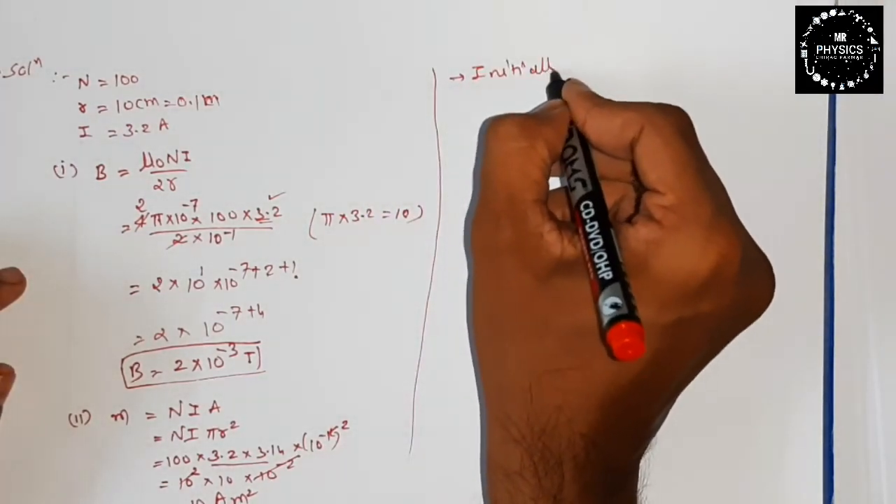When we start from the initial position, initially theta will be zero, so torque is equal to m B sin zero, answer will be zero. Final will be m B sin 90, which gives m B. The value of m we got is 10, and B we have to take 2 Tesla. So the answer will be 20 newton meter.